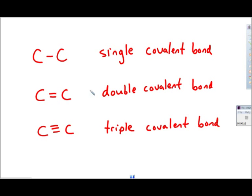A second option is a double covalent bond represented by two dashes, almost like an equal sign. Each carbon is sharing two valence electrons with the other carbon. So there's a grand total of four electrons being shared here, two by each.